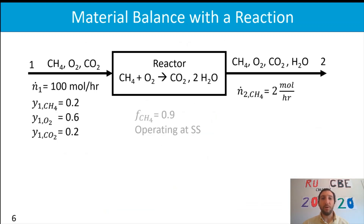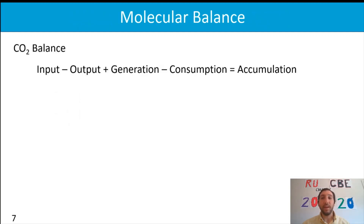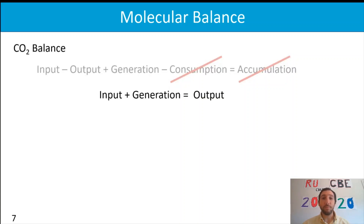Returning to our original diagram, we now know how much methane is coming out in stream two. Next, we approach the carbon dioxide balance. Again, we simplify the general material balance: accumulation is zero at steady state, we're not consuming any carbon dioxide, but we are generating it. So our simplified balance becomes: input plus generation equals output.